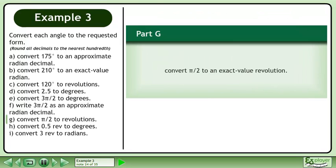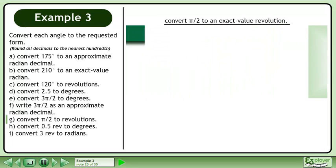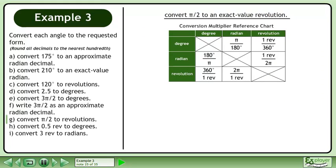In Part G, convert pi over 2 radians to an exact value revolution. We'll use the Conversion Multiplier Reference Chart to assist us. We are converting from radians to revolutions, so multiply pi over 2 by 1 revolution over 2 pi. Cancel and multiply to get 1 over 4 revolutions.